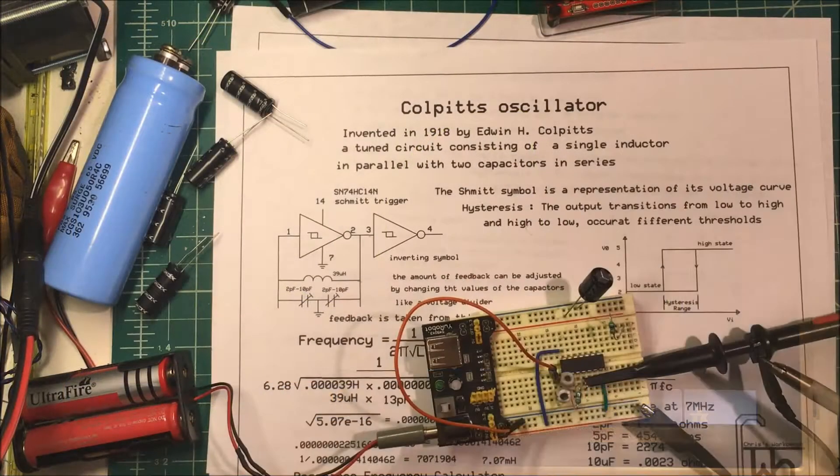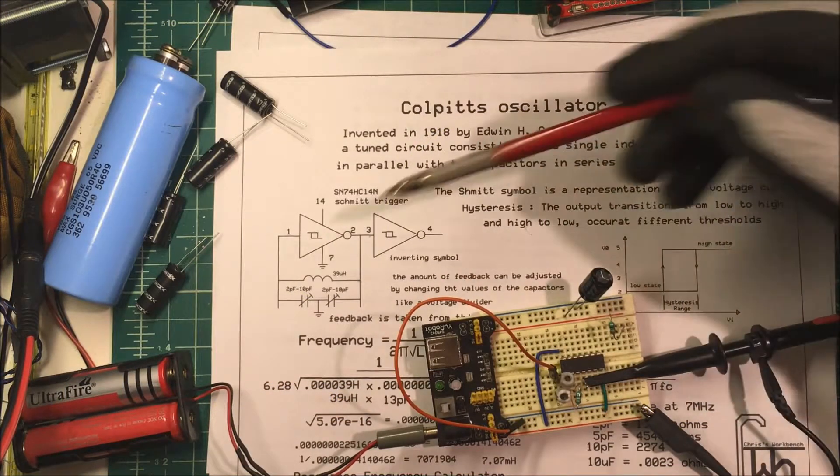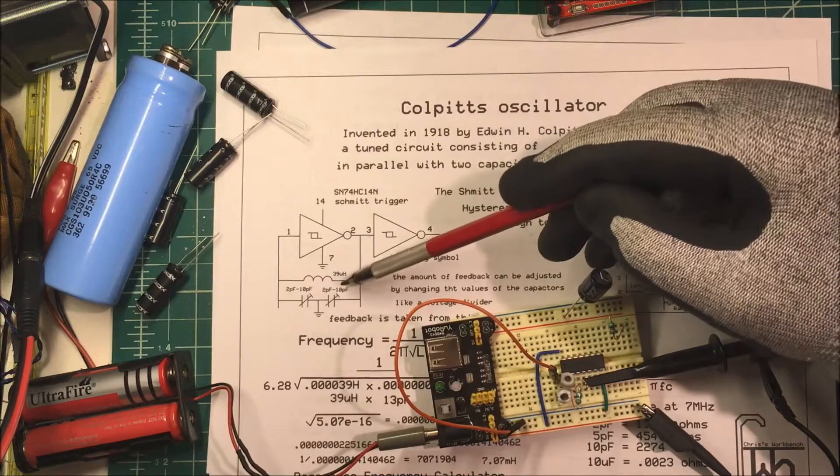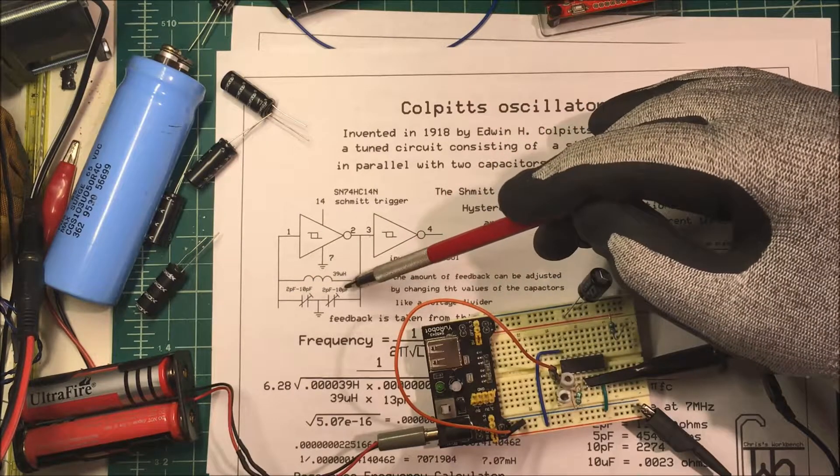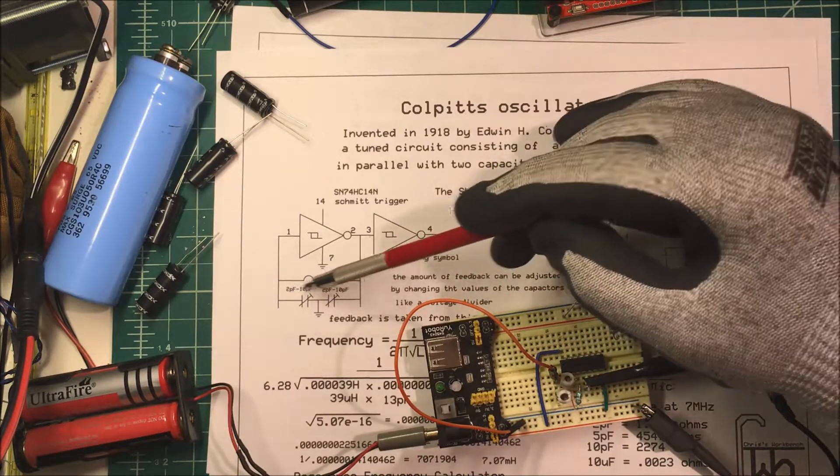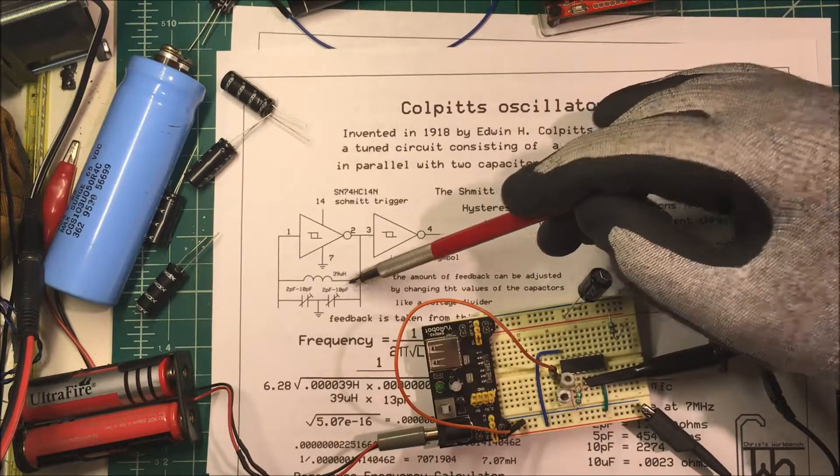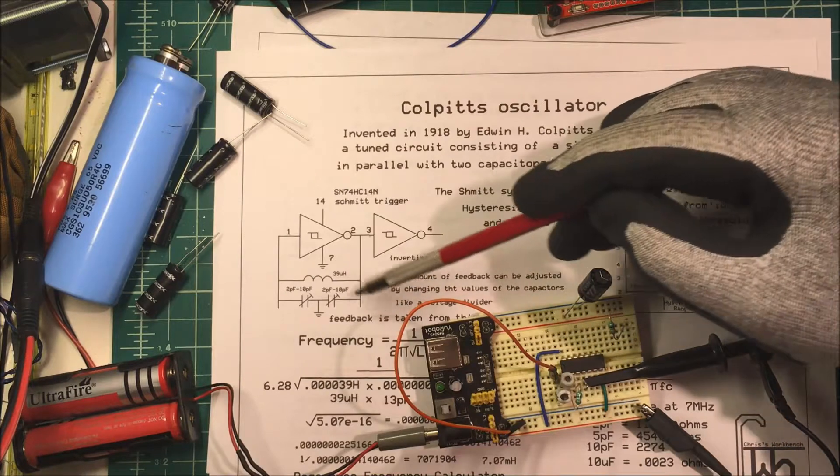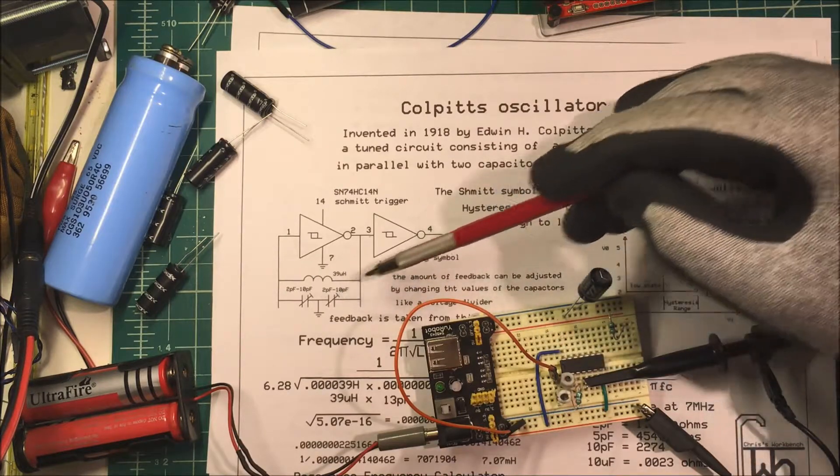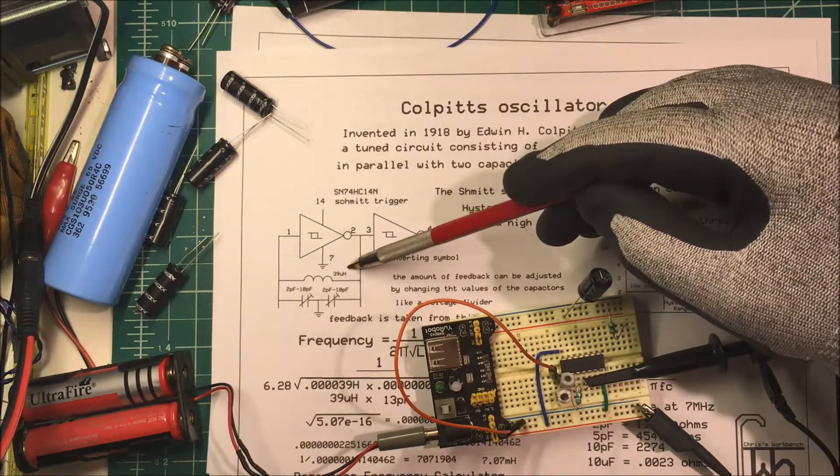We're back at the workbench here. Now you see in my diagram here that I have 10 picofarad trimmer capacitors. Those are going to if they were cranked up all the way they'd only add up to 5 picofarads and of course to get our 7 megahertz I need 13 picofarads at 39 microhenries.